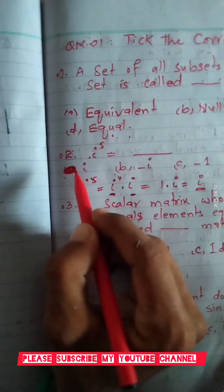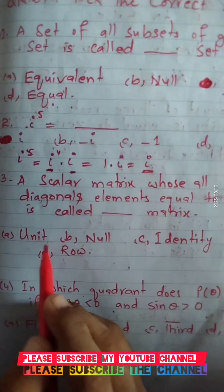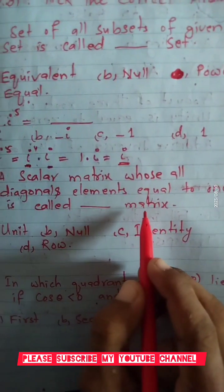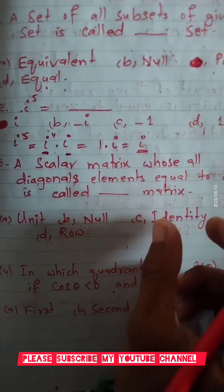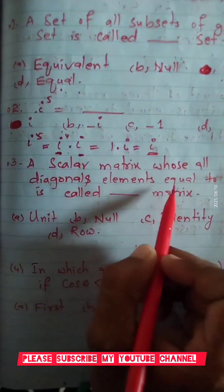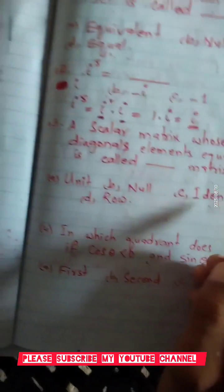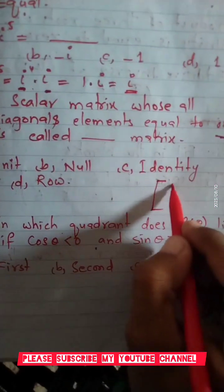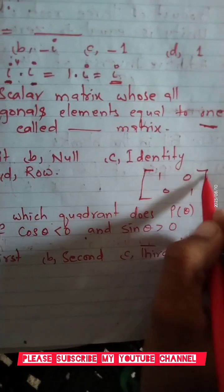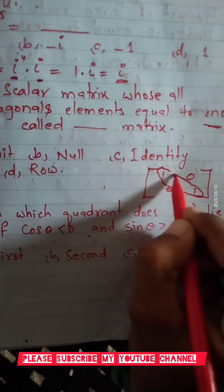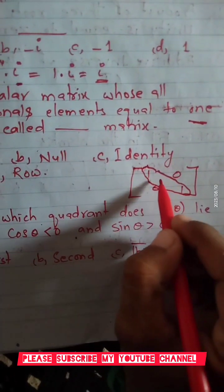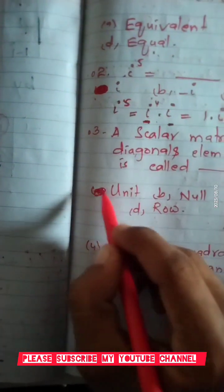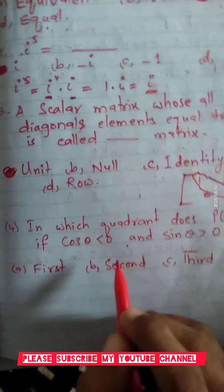A scalar matrix whose all diagonal elements are equal to one is called a unit matrix — or identity matrix. The scalar matrix has equal diagonal elements. A matrix with diagonal elements all equal to one, such as [1, 0; 0, 1], is called a unit matrix. Option: unit matrix is correct.